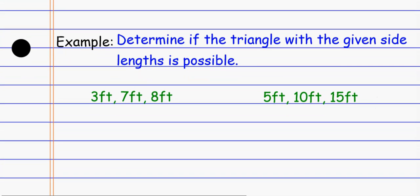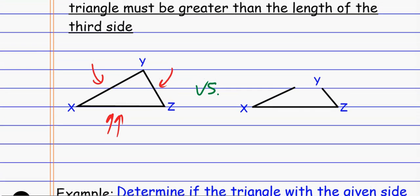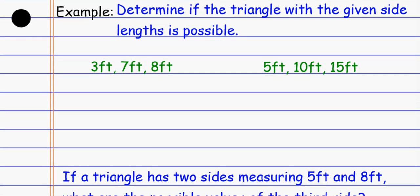For example, determine if a triangle with given side lengths is possible — any two sides have to add up to be bigger than the third side. Looking at sides 3, 7, and 8: three plus seven equals 10, is that bigger than 8? Yes. Three plus eight equals 11, is that bigger than 7? Yes. Seven plus eight equals 15, is that bigger than 3? Yes. Any two sides added together are bigger than the third side, which means I could make a triangle out of these lengths.